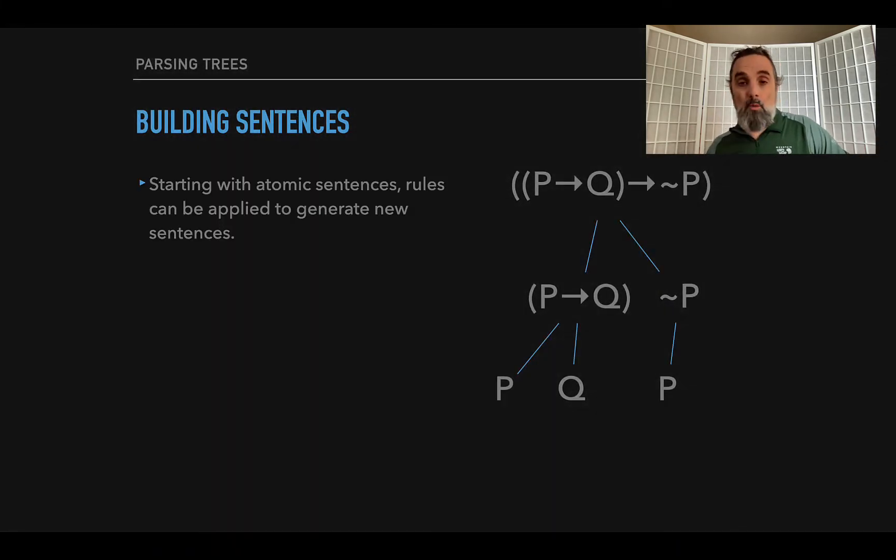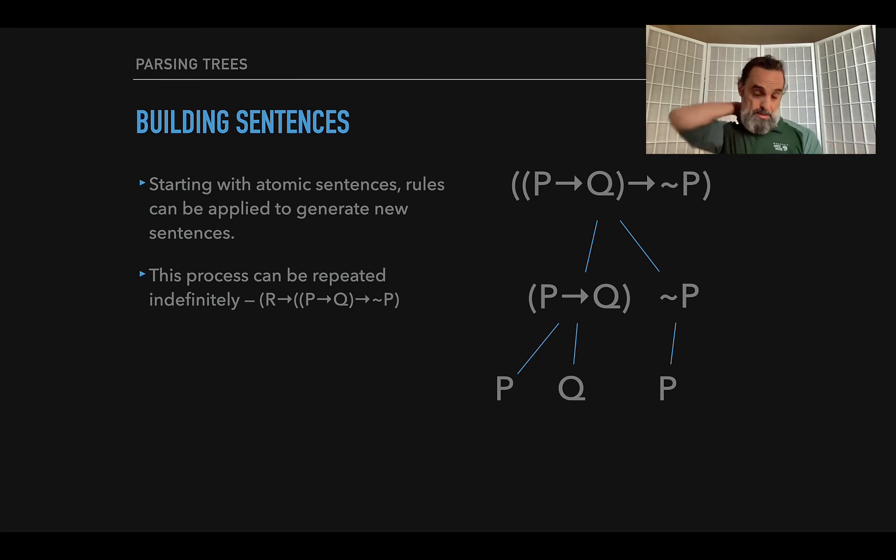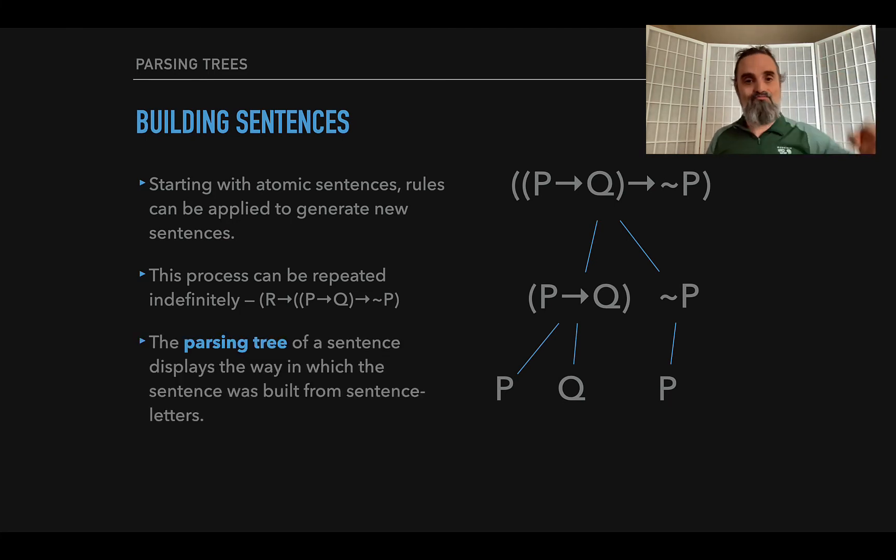So the tree displays how the sentence was built. And the process could go on forever, right? We could say, oh, well, I'd like to put an R on the front of that and make a new conditional. So you could do that and just keep going and going. But once you're done, what we have, this thing is called a parsing tree. Because when you look down at it, it shows how the sentence at the top is built up from its parts, or alternately, how it breaks down into its parts.